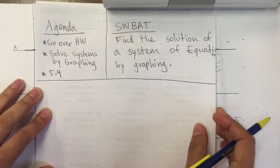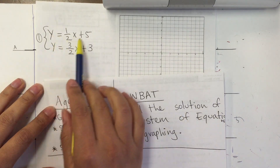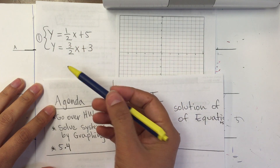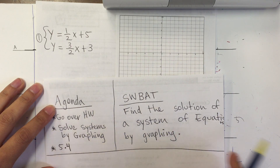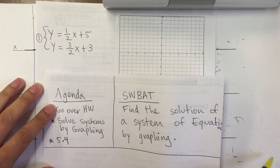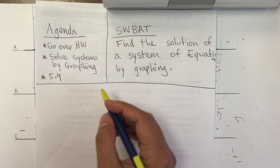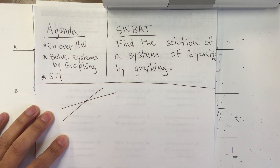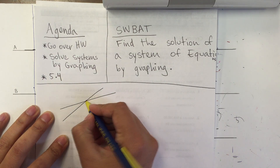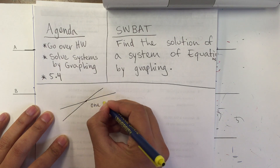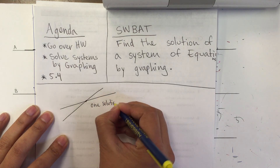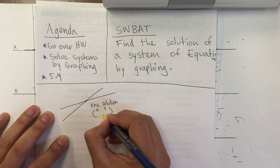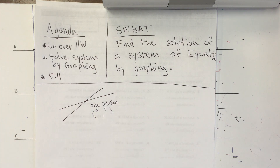Sometimes when you're graphing equations — and I'm going to give you an example — let's say that you have these two equations. You can find the solutions in three different ways. Today we're just going to learn how to find the solution by graphing, and by finding the solution it means that if I graph the two lines, where will these two lines meet? They might meet at one point, which is going to be one solution, and you're going to give me the value of x and the value of y. We'll get to that once we start.